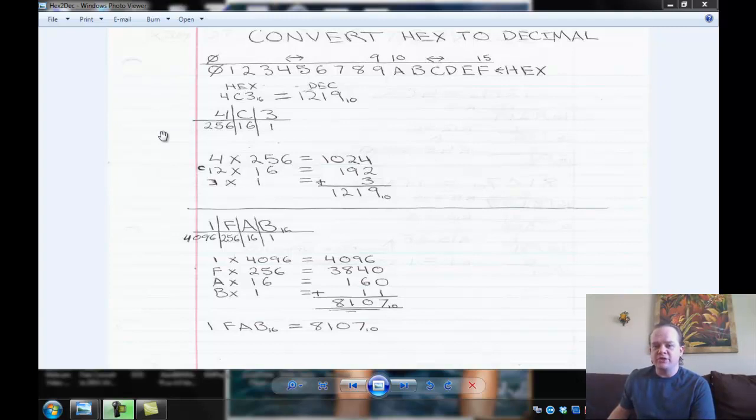Also, we need to understand what the letters are in hexadecimal. Letters represent 10 through 15. So 0 through 9 is the same as we're used to in decimal. But 10 through 15, 10 is A, B is 11, C is 12, D is 13, E is 14, and F is 15. That's all it is.